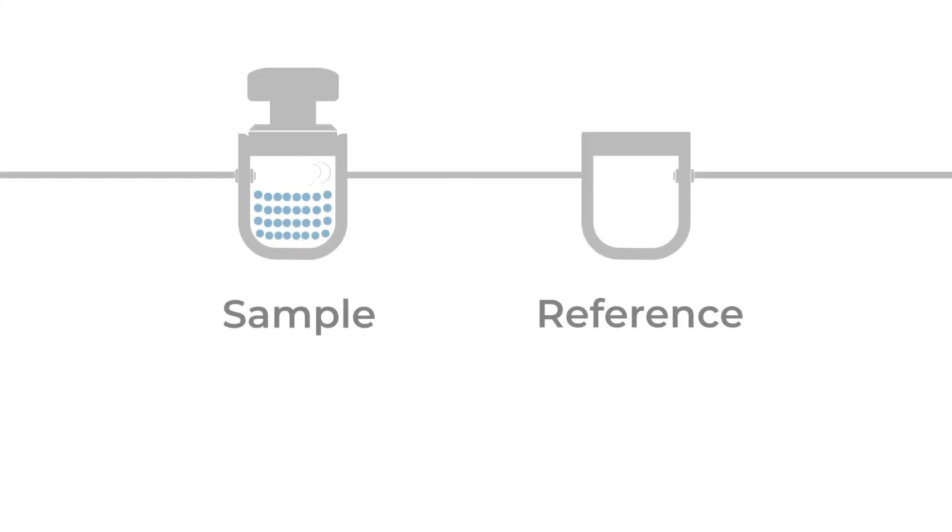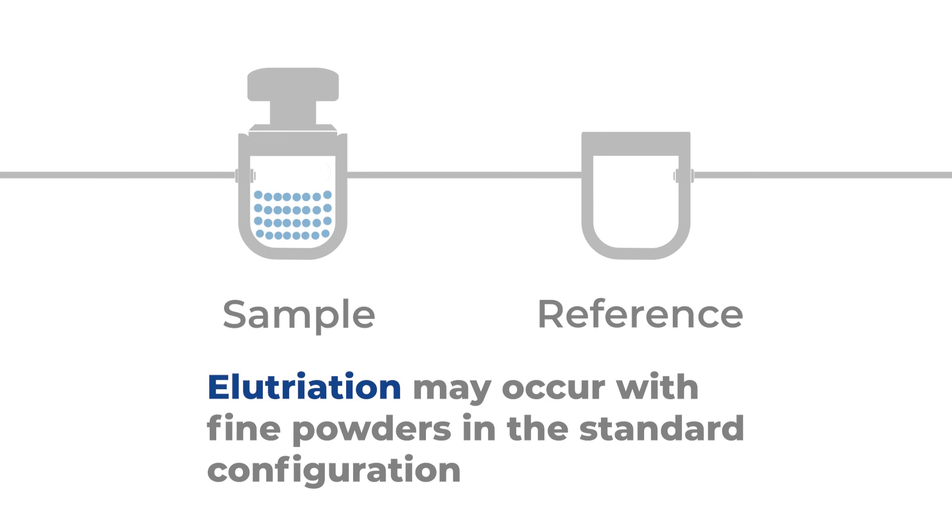If you're working with particularly fine powders, we have introduced a new powder-safe mode to help protect your sample. In a typical analysis method, the AccuPIC will first fill the sample chamber with gas, then followed by the reference chamber. If your powder is very fine, some of the sample may elutriated the reference chamber during analysis.